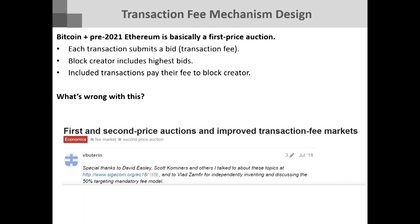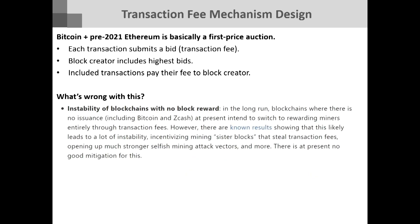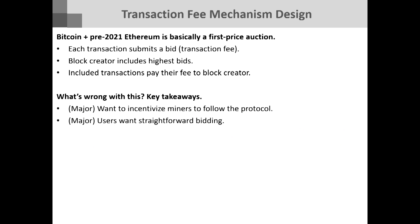Around 2018, Vitalik came to Economics and Computation — the main conference for our field — talking to a lot of people about how to redesign the transaction fee mechanisms. The key takeaways were: A, you really need to incentivize miners to follow the protocol — that is a first-order concern in the blockchain space; and B, users really want straightforward bidding. Users were not happy with fluctuating fees over time — they never knew how much they needed to bid to get included, and prediction algorithms were really bad because of so much volatility.